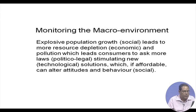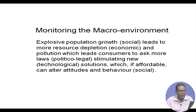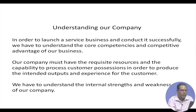Monitoring the macro environment shows how its different parts interact with each other. Explosive population growth — a social phenomenon — leads to more resource depletion, an economic phenomenon, and pollution, which leads consumers to ask for more laws (political/legal), stimulating new technological solutions. If affordable, these alter attitudes and behaviour (social again). Political, economic, social, and technological issues are intermingled, and changes in one affect changes in other types of macro environment.